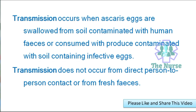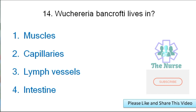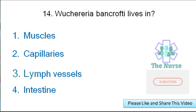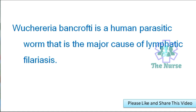Transmission does not occur from direct person-to-person contact or from fresh feces. Next question: Wuchereria bancrofti lives in — muscles, capillaries, lymph vessels, or intestines? Correct answer: lymph vessels. Wuchereria bancrofti is a human parasitic worm that is a major cause of lymphatic filariasis.